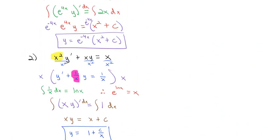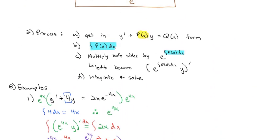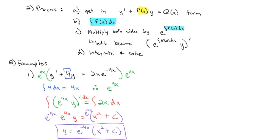While the steps might get a little ugly with the integration, the process is identical for every single problem. First, get into the correct form. Then integrate that p of x. Then multiply both sides by e to the power of whatever your integral was, because that makes the left side the nice convenient derivative you're looking for. Then integrate and solve the resulting equation. These are really easy once you get comfortable and familiar with the process. Practice, practice, practice is the next step. Let me know if you have any questions.